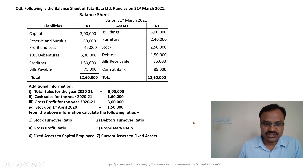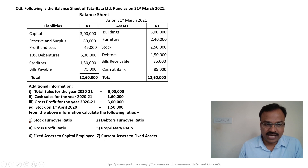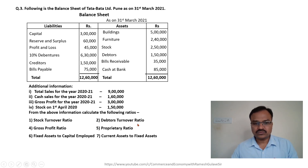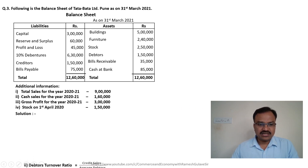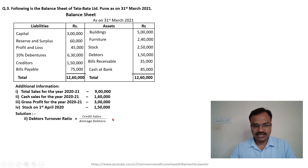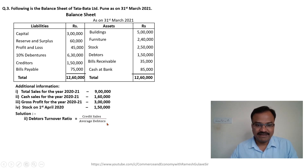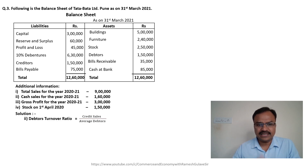Now let us move on to the next ratio. The question asks us to calculate the debtors turnover ratio. We have already calculated the stock turnover ratio, now we need to calculate the debtors turnover ratio. The formula for debtors turnover ratio is credit sales divided by average debtors. So we need to calculate credit sales first and then average debtors.